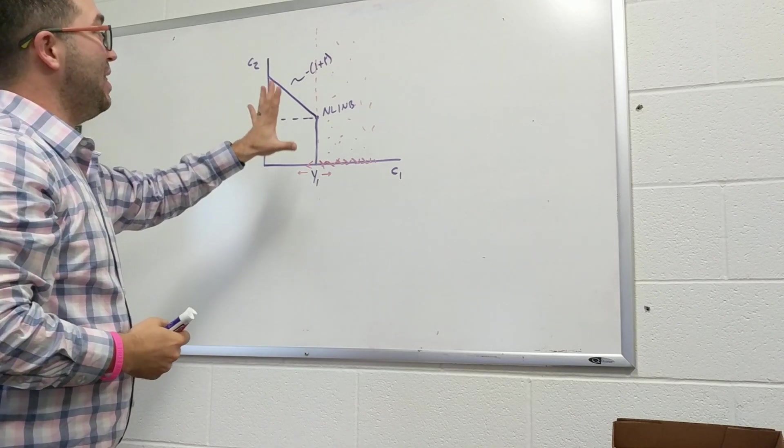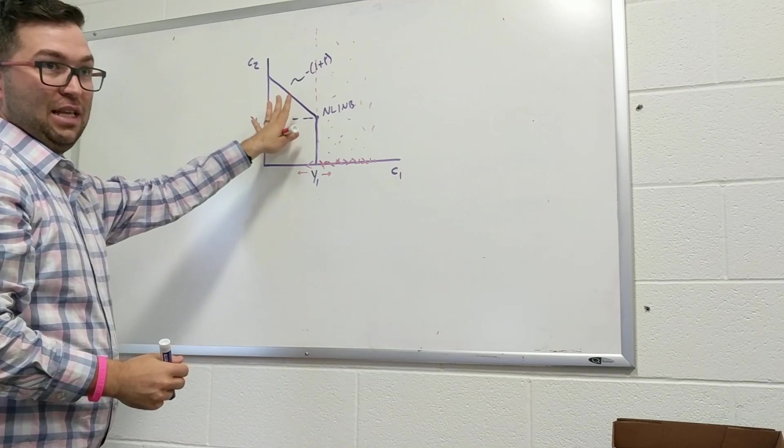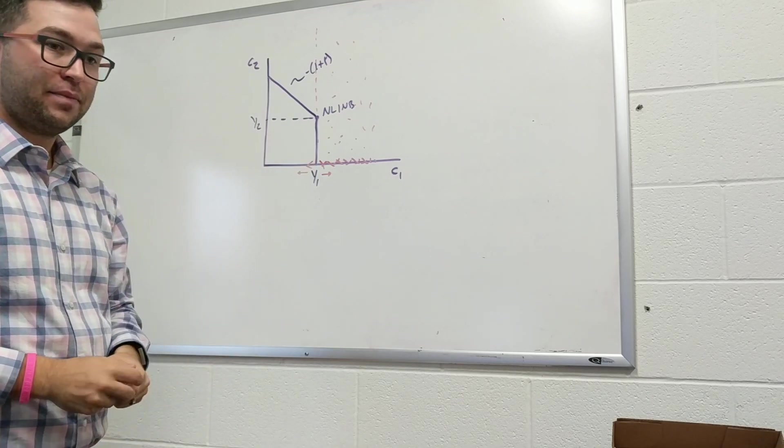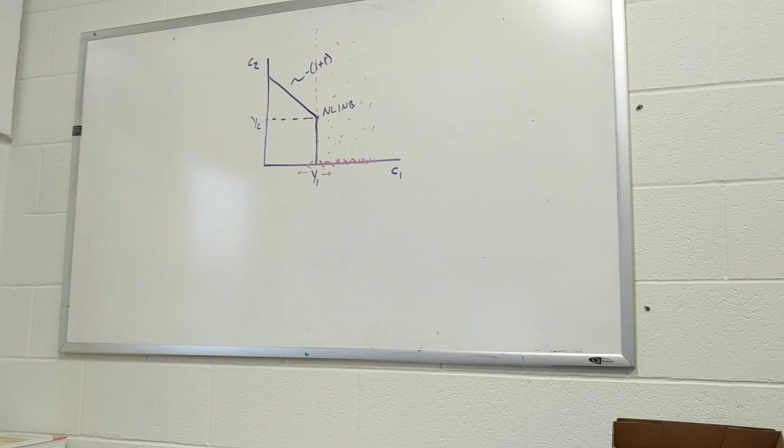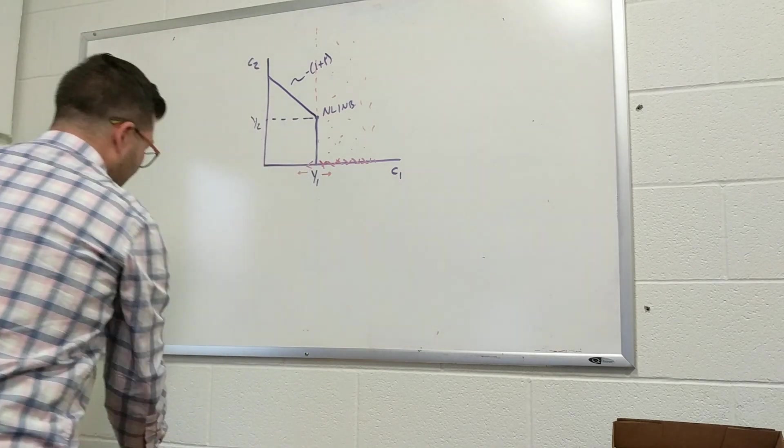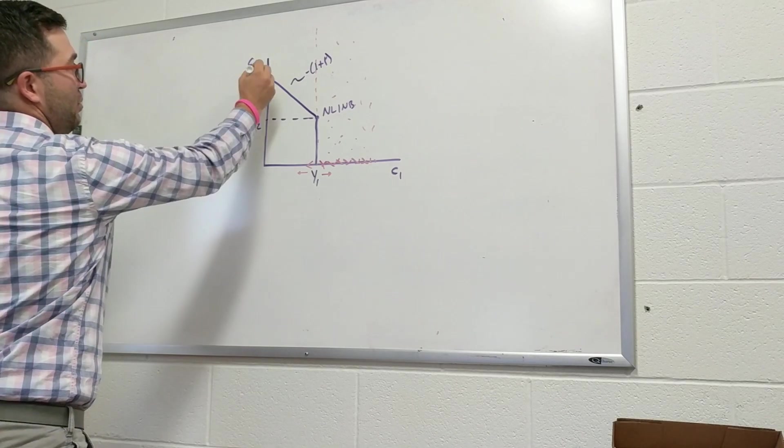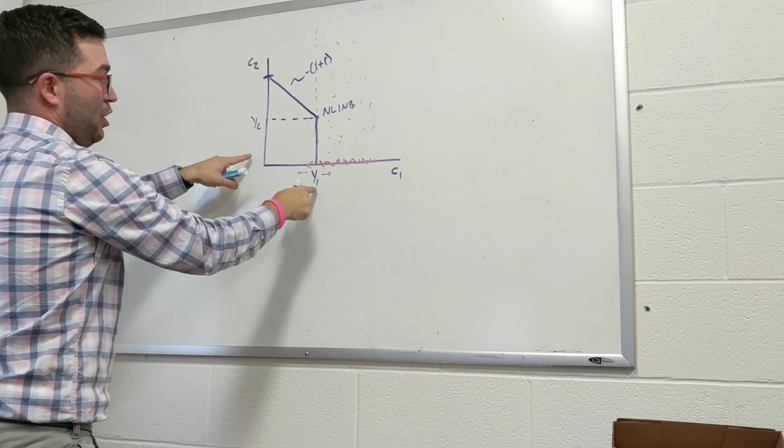And so we'll now see that anything inside this purple area, all of these are options that they can consume. Everything outside, they can't. Okay? This right here, another part of that question was just this point is going to be all of my current income